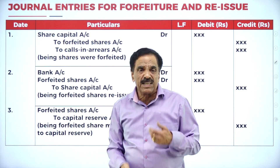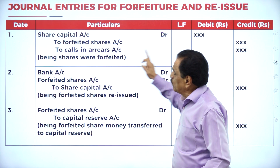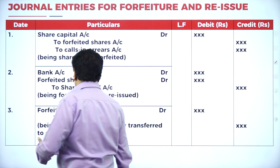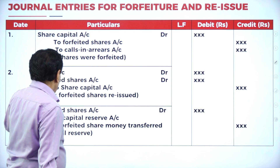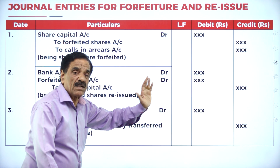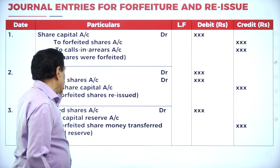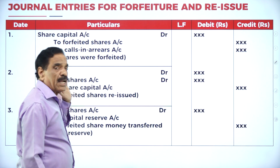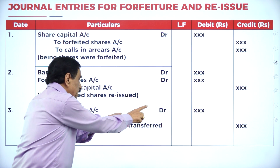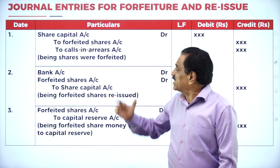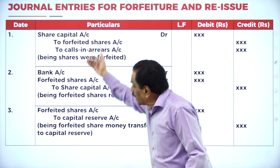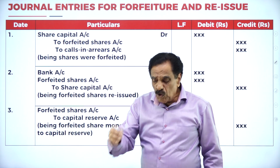If he fails to pay both the first call and final call, then: to Forfeited Share Account, to Share First Call Account, to Share Final Call Account. When re-issued, the entry is: Bank Account Dr., Forfeited Shares Account Dr., to Share Capital Account. Whatever excess money we got goes to Capital Reserve: Forfeited Shares Account Dr. to Capital Reserve Account. This can be understood better with a problem.